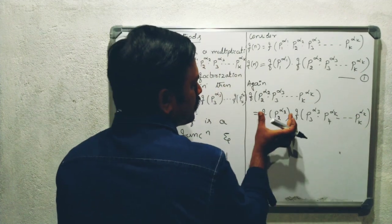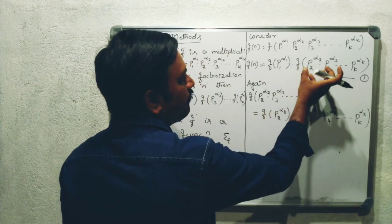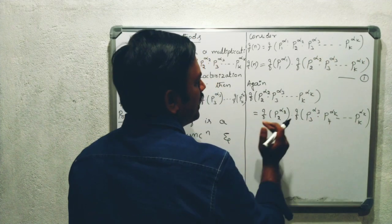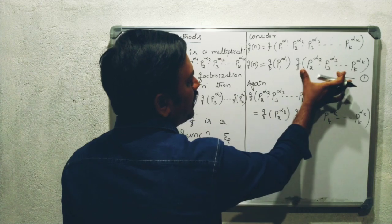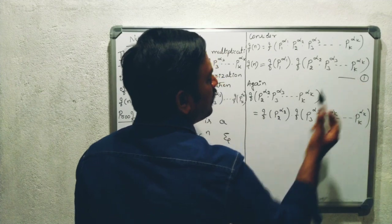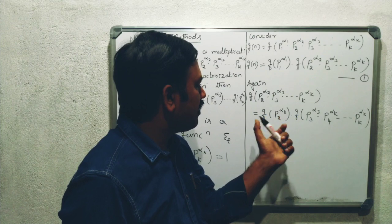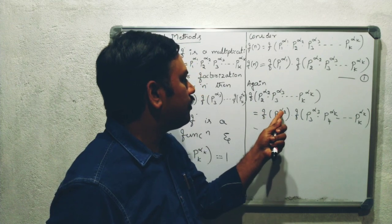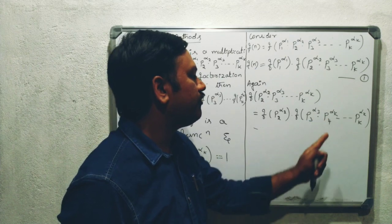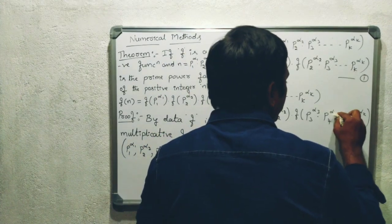So, in a similar manner, for a multiplicative function you can separate each term individually: F of P2 to the power of alpha 2, into P3 to the power of alpha 3, and so on Pk to the power of alpha k, can be written as F of P2 to the power of alpha 2, into F of P3 to the power of alpha 3, into P4 to the power of alpha 4, and so on Pk to the power of alpha k.